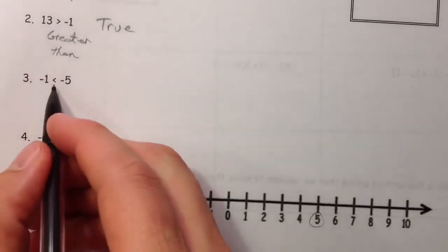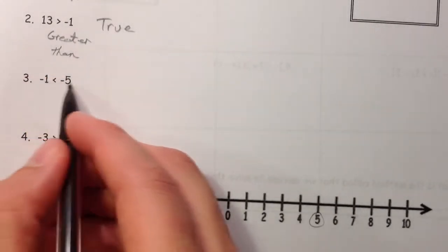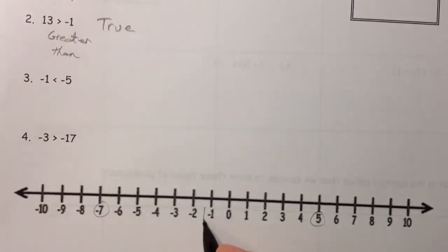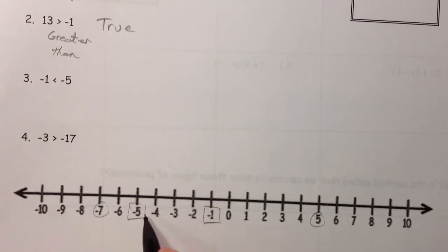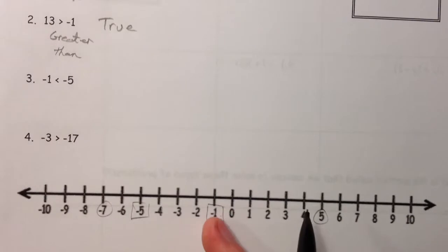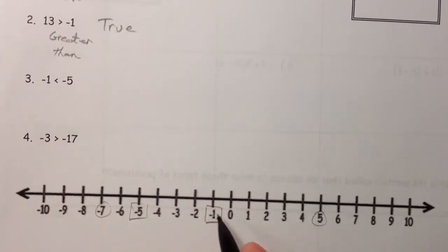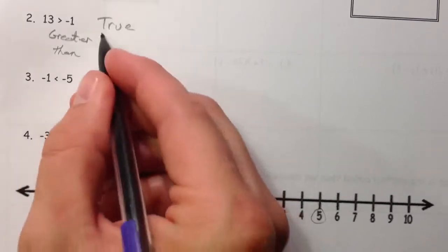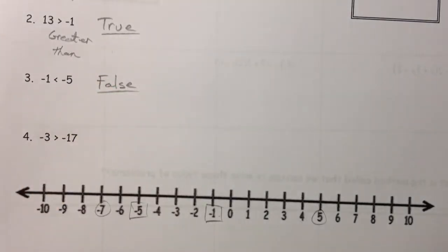Is negative 1 less than negative 5? Well, if you ignore the negatives, 1 is less than 5. However, negative 1 here, is that less than negative 5? No, it's to the right of it. It's bigger than that, because you are less in debt. If you owe somebody $5 and you owe somebody $1, owing them $1 is better than owing them $5. So, that statement is false.